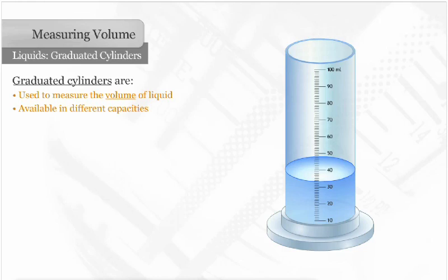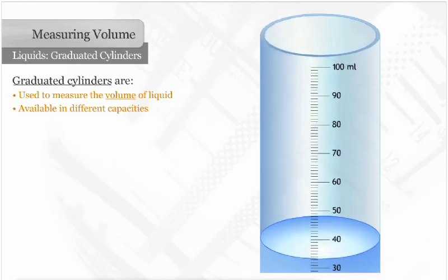This one is designed to measure up to 100 milliliters of liquid. Each marked line is equal to 10 milliliters, and each unmarked line is equal to 1 milliliter.